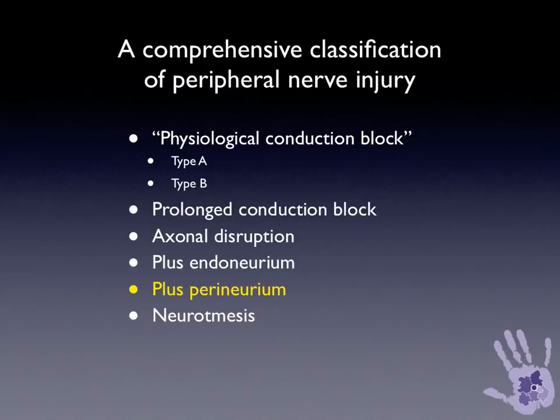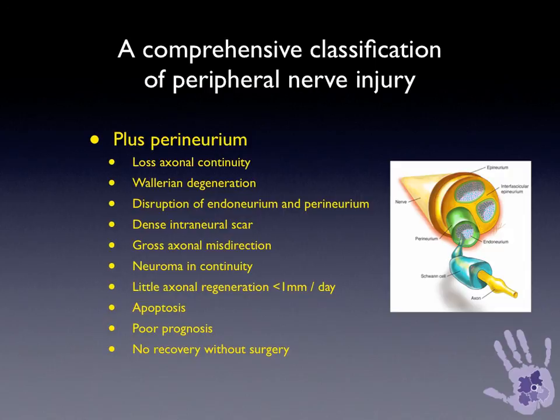Once there is perineural damage within the nerve, there is much more extensive scarring, distal degeneration, and gross axonal misdirection — and normally a neuroma in continuity is the consequence. If any axons manage to get through the scar, their rate of progression is very slow, usually less than one millimetre per day. Because of the degree of scarring, the prognosis is poor, there is much cell loss due to apoptosis, and generally there is no significant motor or sensory recovery. Surgery is often involved in these cases in order to optimise outcome.